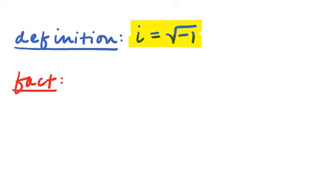A relevant fact that will be of use a little later is that if I take i and square it, I get negative 1. Because if you square the square root, you lose the square root and are left with the radicand. So i squared equals negative 1. That will come back when we go to multiply two complex numbers, and also when we look at really high powers of i.